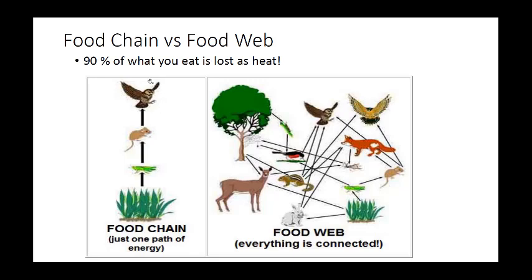Another way to think about this: what's physically larger — a herbivore or a carnivore? Most herbivores in Africa, like zebras, giraffes, rhinos, and elephants, are huge compared to lions, cheetahs, and leopards. Because they're eating from such a rich energy source, they can get big — they have the energy to grow to massive size. But carnivores at the top can't get that big because there's not much energy available to maintain a large body. Thank goodness, because a lion the size of an elephant would be very scary.